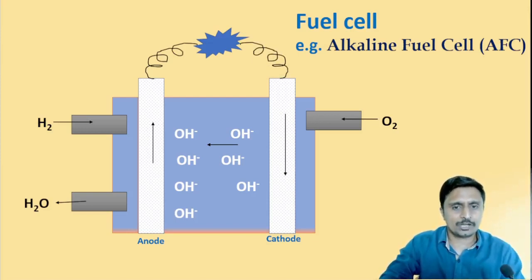At cathode what happens? Whatever the electrons are captured by the cathode, they are reduced and again this oxygen is also going to reduce to form the water molecule. This reaction I have explained on the next slide.